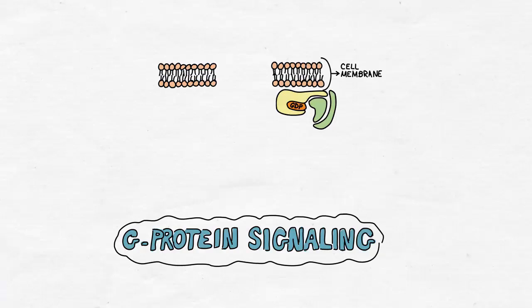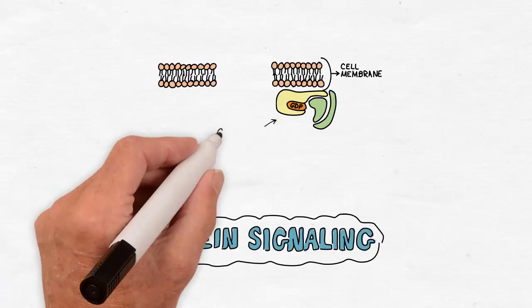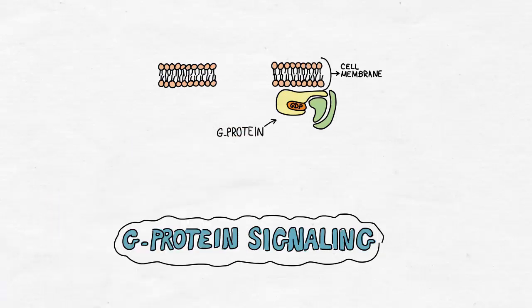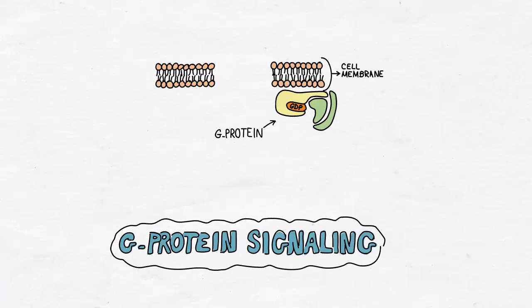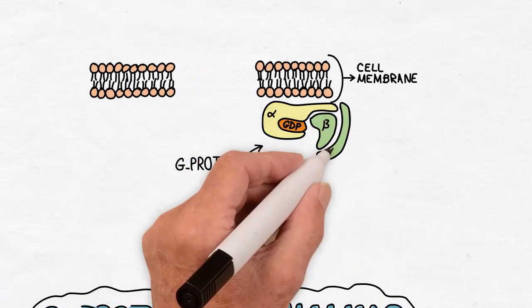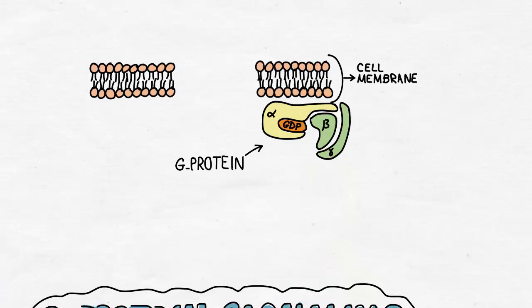There are two families of G-proteins described. The one we are talking about in this video is the family of heterotrimeric or the large G-proteins as it consists of three non-identical subunits: alpha, beta and gamma.